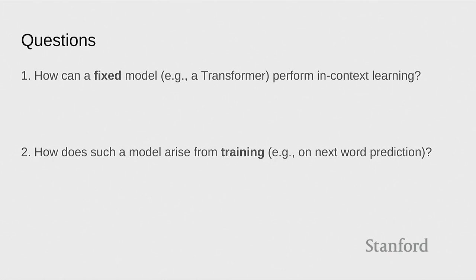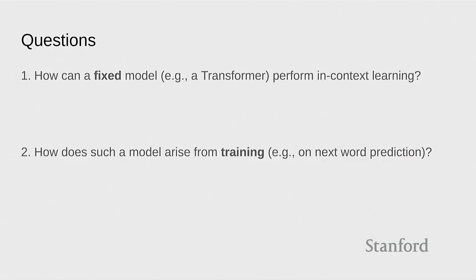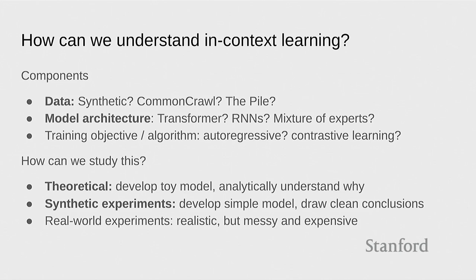In order to understand in-context learning, I want to break things down into two pieces. First is the question of how a fixed model — never mind where it came from — can perform in-context learning. Because this is just a giant transformer getting fed in a sequence of examples, and it has to do some association between the x's and y's to be able to predict. How is that possible? And the second question is how do you get one of these models from training on next-word prediction? I'm not going to answer these fully, but we're going to try to make some progress.